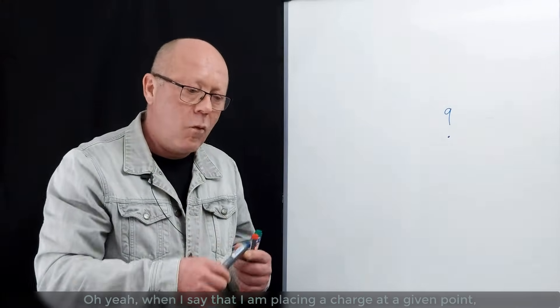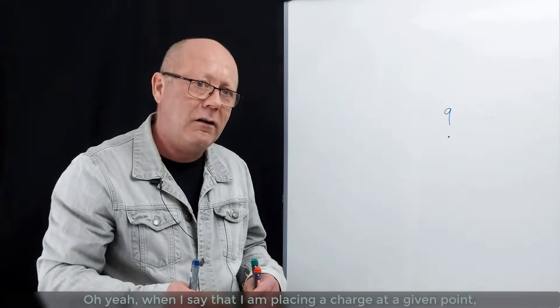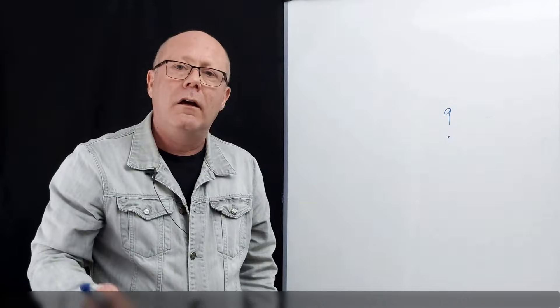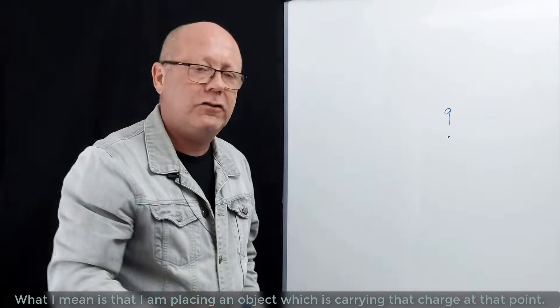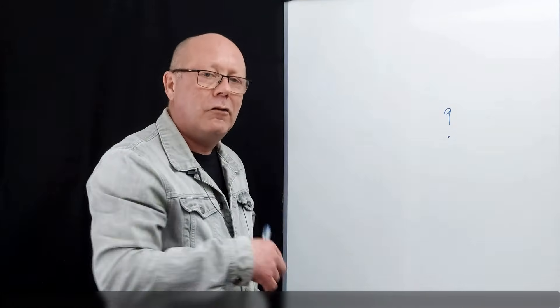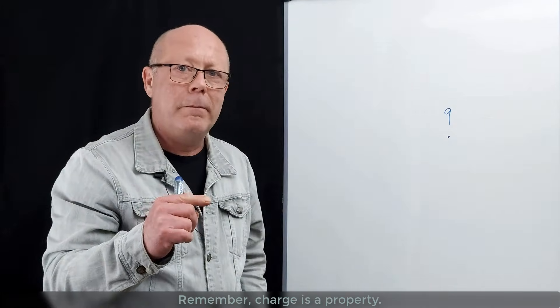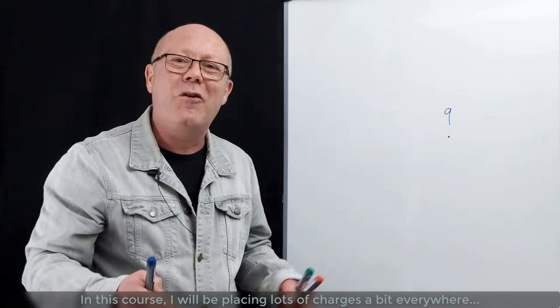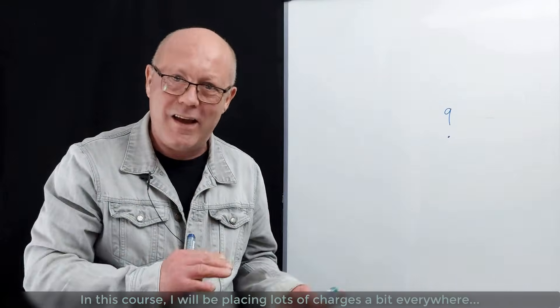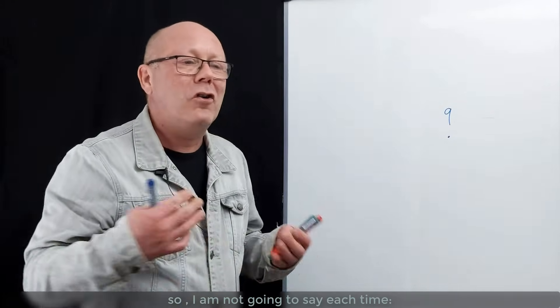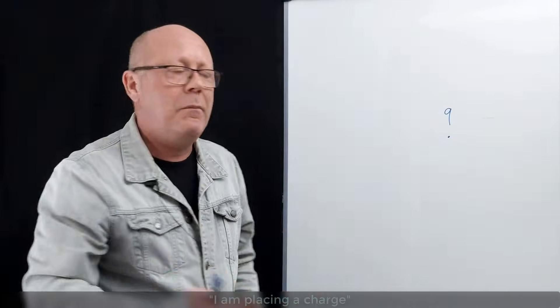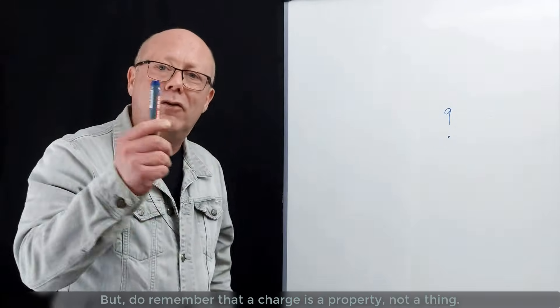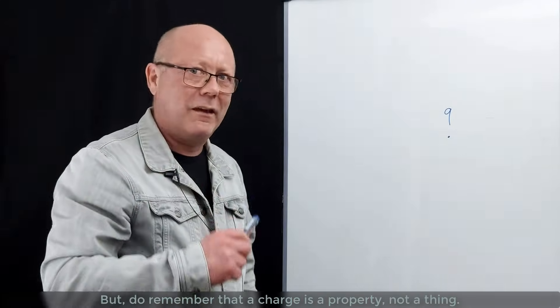Oh yeah, when I say that I'm placing a charge at a given point, what I really mean is that I'm placing an object which is carrying that charge at that point. Remember, a charge is a property. But in this course I'll be placing lots of charge a bit everywhere, so I'm not going to say each time I place an object which is carrying this charge. I'll just say I'm placing a charge. But do remember that a charge is a property, not a thing.